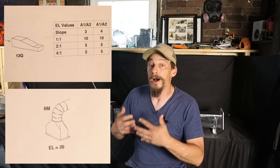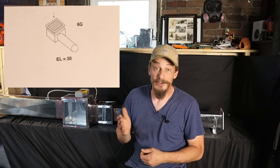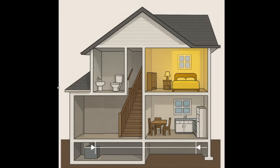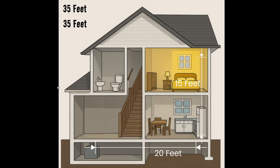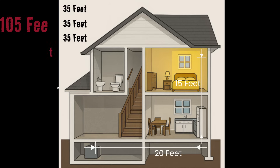Everything we add to the duct run has its own effective length. A reducer fitting has an EL, any boot at the end of the run has an EL, and even the register on the wall has an effective length. We add all of these to our linear measurements to get a total number. For example, if the ductwork runs 20 feet across a basement ceiling and then 15 feet straight up, that's 35 feet. Add an elbow at the turn — another 35 feet — plus a boot and register grille, another 35 feet. So even though the tape measure shows less than 40 feet, the resistance the blower must overcome is equivalent to 105 feet.